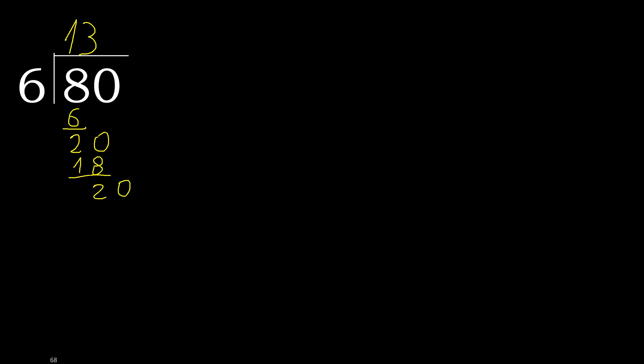There is no next number, so we complete. Always complete with 0, here with a point. So we write 0 point, and bring down 20.